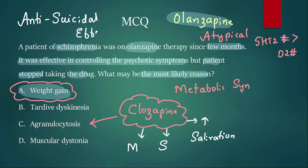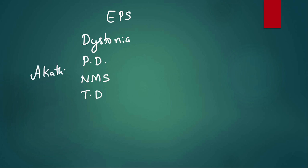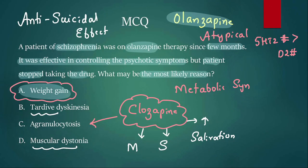Tardive dyskinesia and muscular dystonia are extrapyramidal symptoms. The extrapyramidal symptoms include: dystonia, Parkinson-like symptoms, neuroleptic malignant syndrome, tardive dyskinesia, and akathisia. These are mainly seen with typical antipsychotics more than atypical antipsychotics — so those options are ruled out. Since olanzapine is atypical, there is less chance of extrapyramidal symptoms. Therefore, going back to the question, the answer is weight gain.